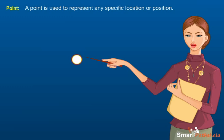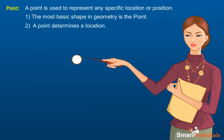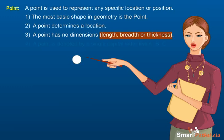Points: one, the most basic shape in geometry is the point. Two, a point determines a location. Three, a point has no dimensions (length, breadth or thickness). Four, a point is denoted by a single capital letter like A, B, C.